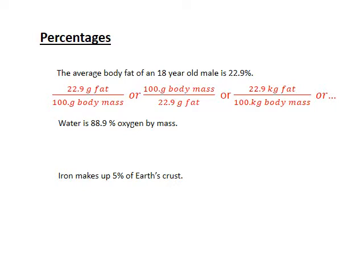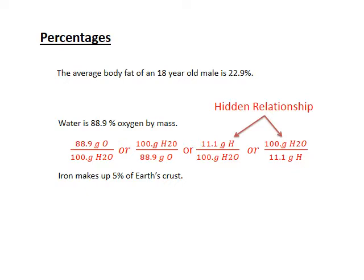Water is 88.9 percent oxygen, so I can express that as grams of oxygen per a hundred grams of water as a total. So it's 88.9 grams of oxygen for every hundred grams of water, or I could say a hundred grams of water is equivalent to 88.9 grams of oxygen.